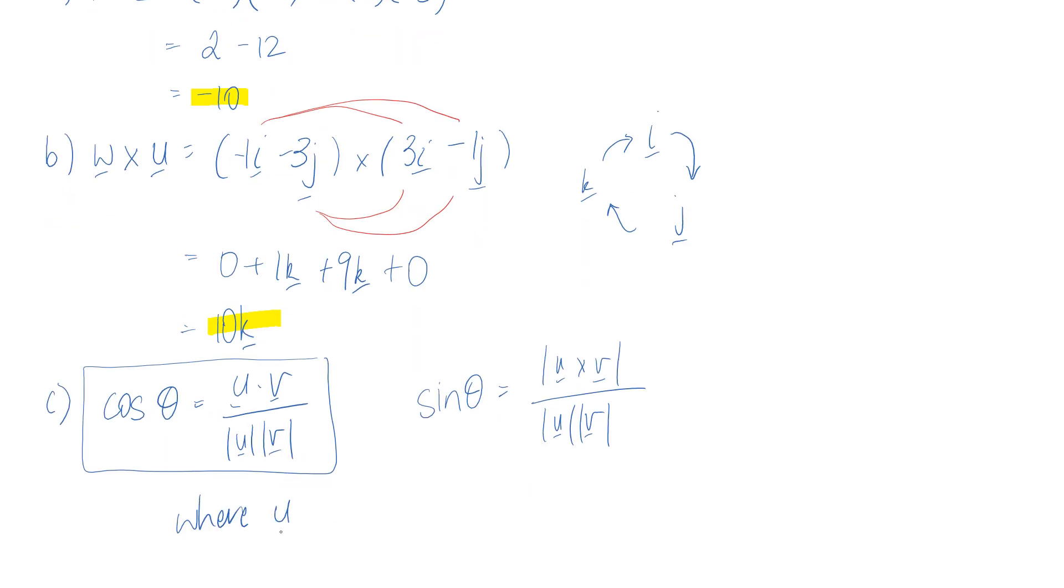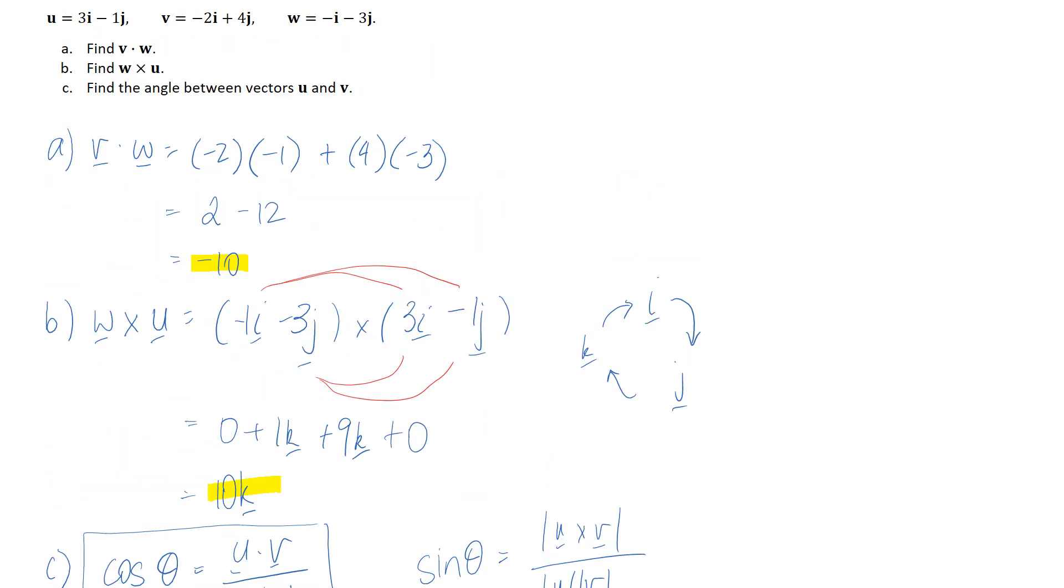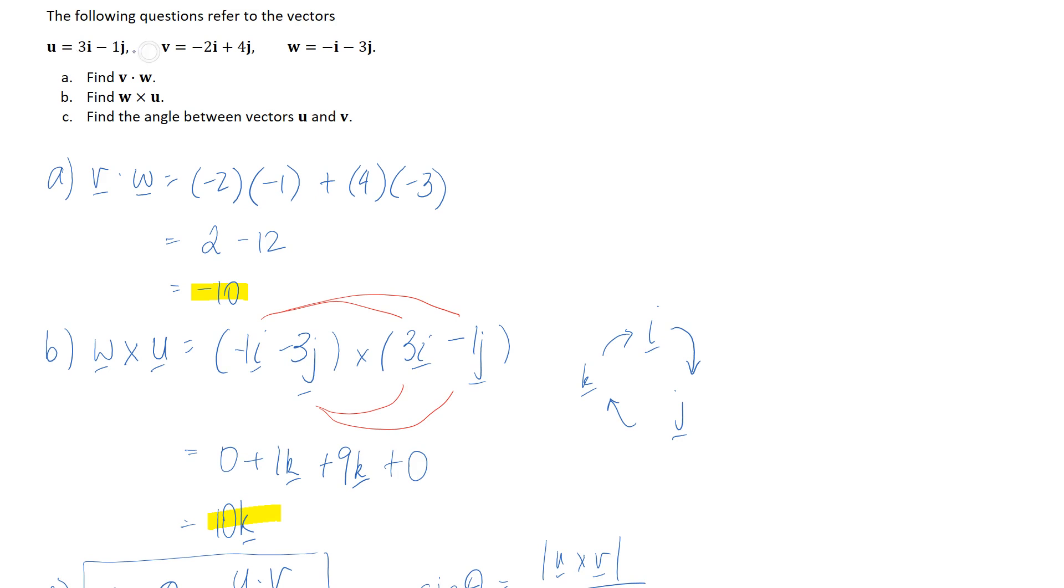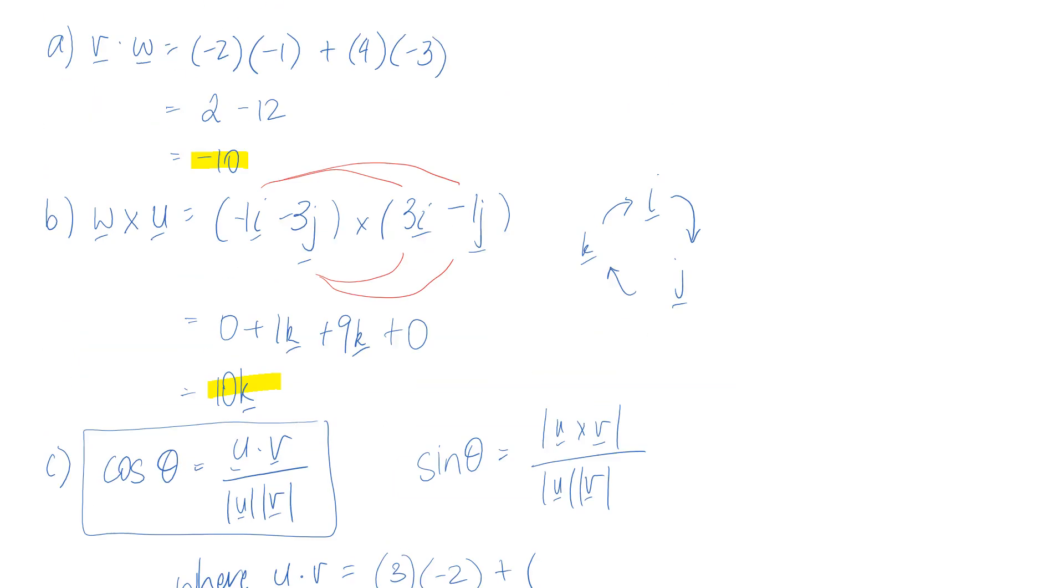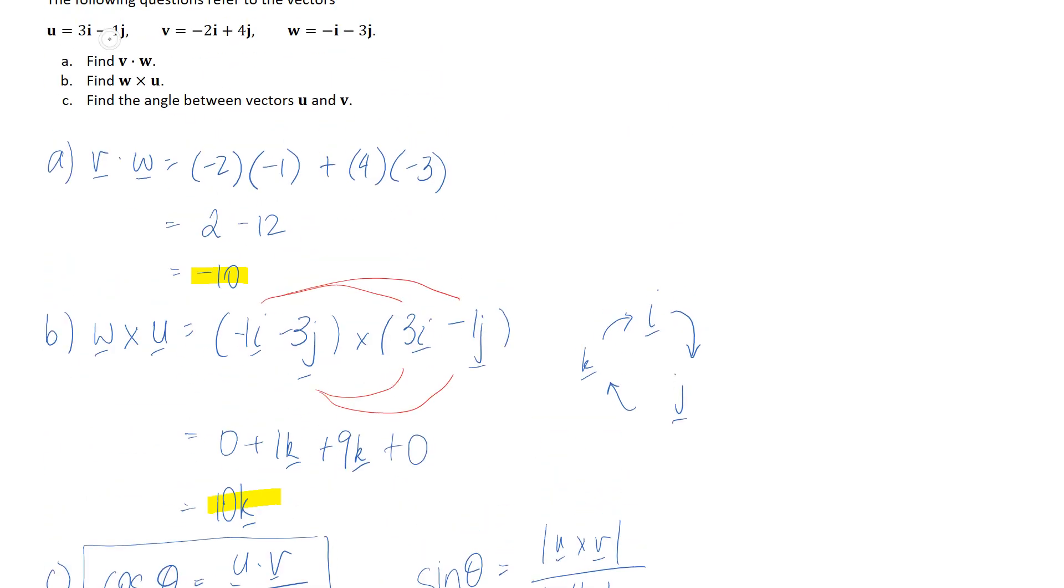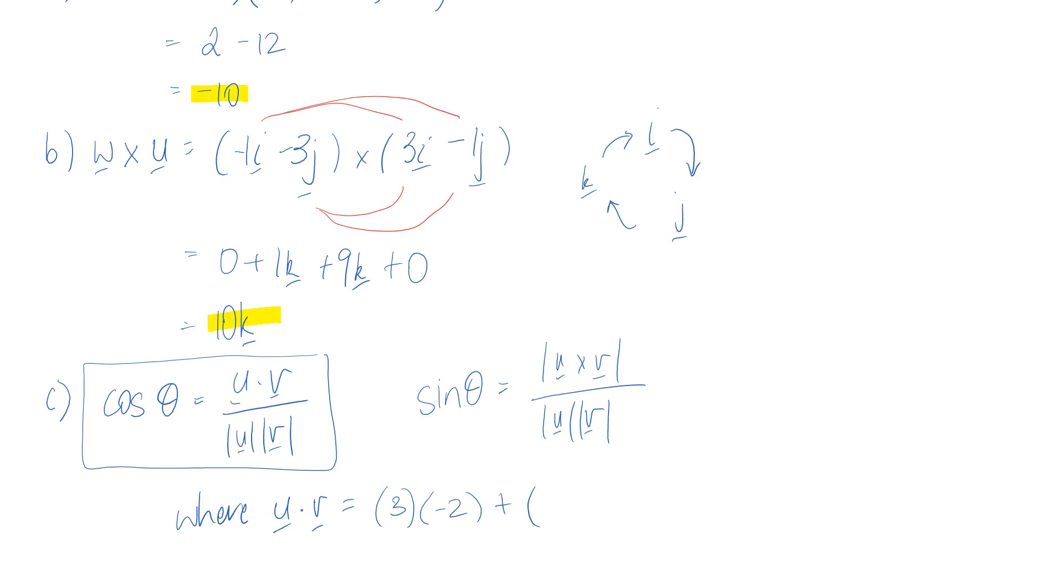So this is where we again take the components corresponding to each other multiply them together and then add the result. So if we go up here we're looking at u and v. So for the corresponding i components it's going to be 3 and negative 2 and then for the y components it's going to be negative 1 and positive 4.